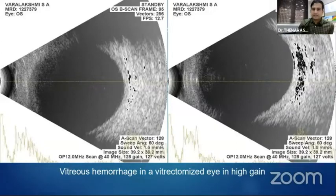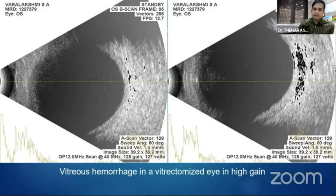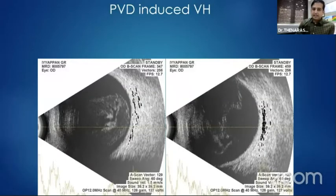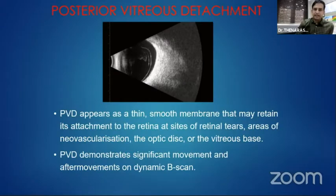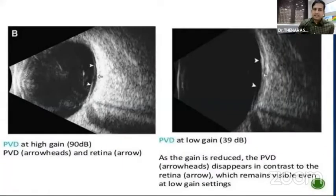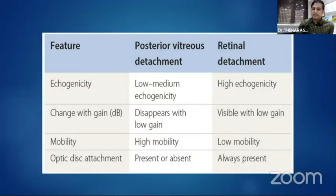In post-vitrectomized eyes with re-bleed, vitreous hemorrhage is difficult to pick up; only by increasing the gain can we see mild-to-moderate vitreous dot echoes. In PVD-induced vitreous hemorrhage, the first picture shows complete PVD and the second shows incomplete PVD. To differentiate PVD from retinal detachment: in PVD, you can see a thin line that disappears if we reduce the gain. In retinal detachment, reflectivity persists even with reduced gain, and the retina is always attached to the optic disc.